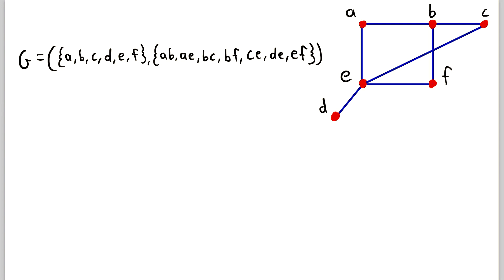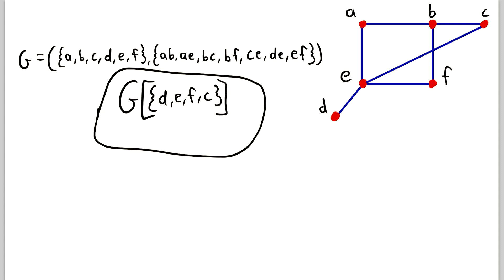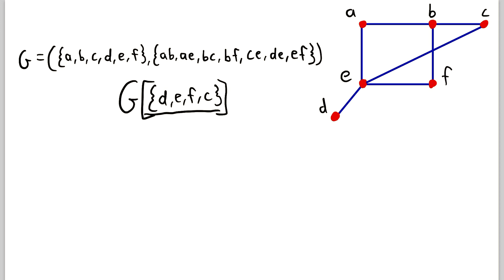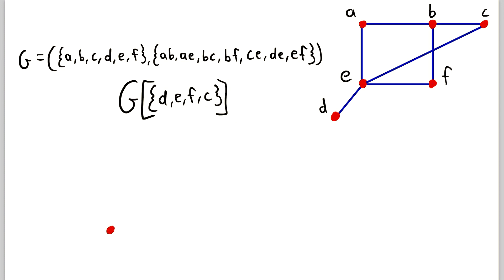Let's look at another example, starting with the vertex-induced subgraph notation. We'll look at the subgraph of G induced by the set of vertices containing D, E, F, and C. We're not talking about edge-induced subgraphs in this lesson, but briefly: if the set in the notation is a set of edges, it's an edge-induced subgraph; if it's a set of vertices, it's a vertex-induced subgraph. Since this is a set of vertices, we're looking at a vertex-induced subgraph. To draw this graph we start by drawing these four vertices: D, E, F, and C.